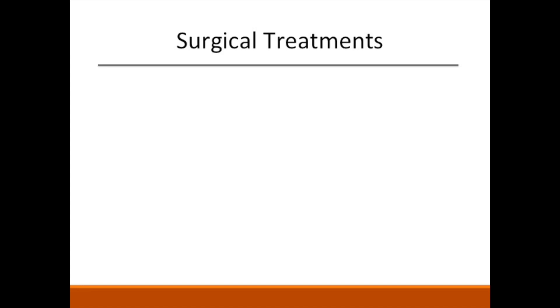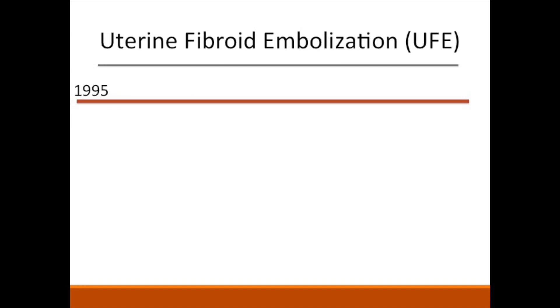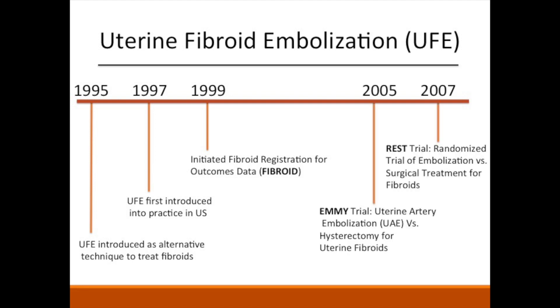The side effect profile discourages long-term use, and fibroids often return to size after cessation of such therapy. The next steps are more invasive. When considering surgical options, hysterectomies and myomectomies have been the classical treatment options. In the mid-1990s, UFE was introduced as an alternative technique to treat fibroids. In 1999, a landmark registry called FIBROID was initiated, and in the mid-2000s, several randomized control trials, such as the EMMY and REST trials, contributed to the establishment of UFE as a viable alternative to surgery.